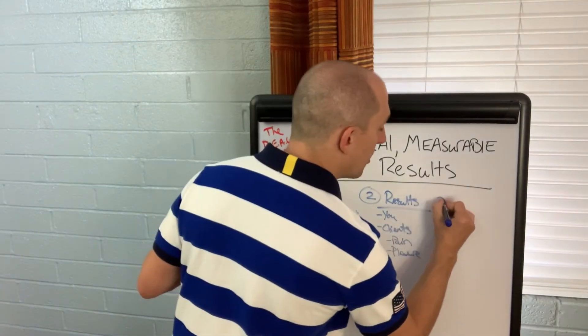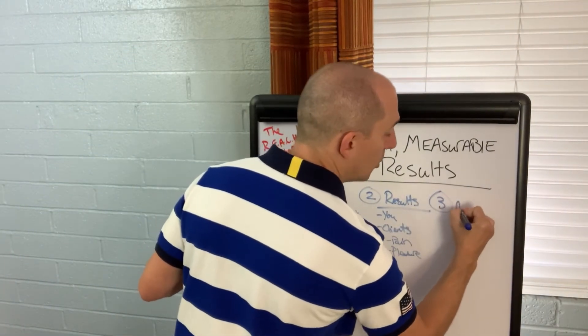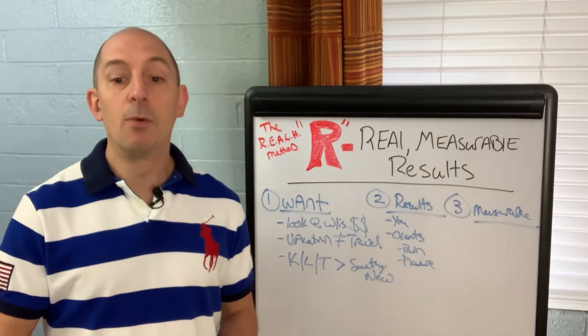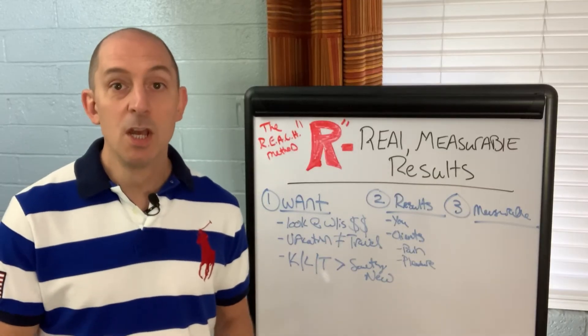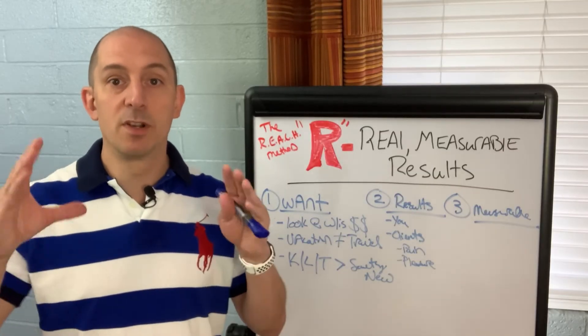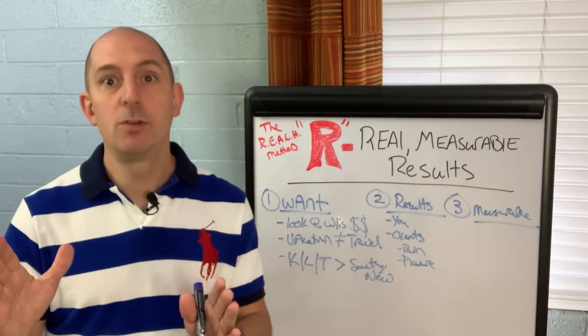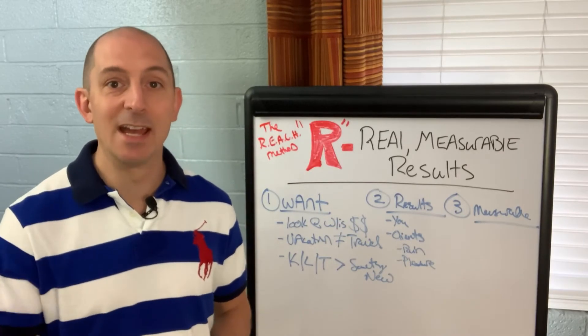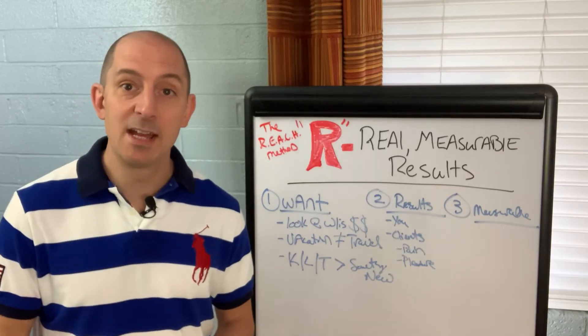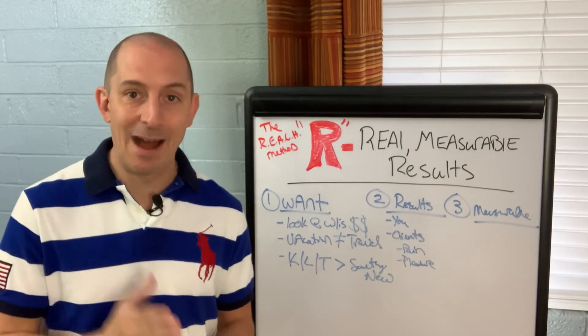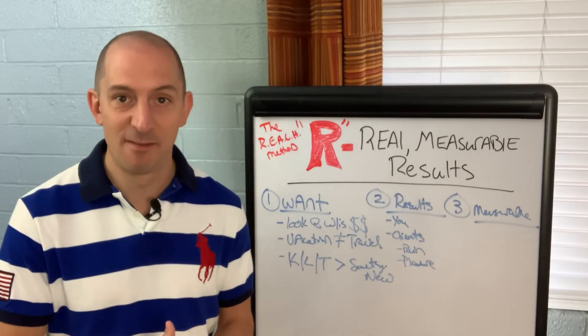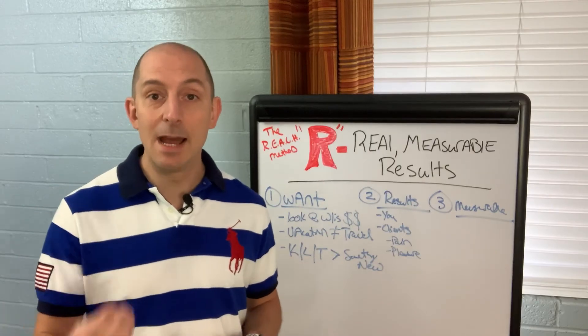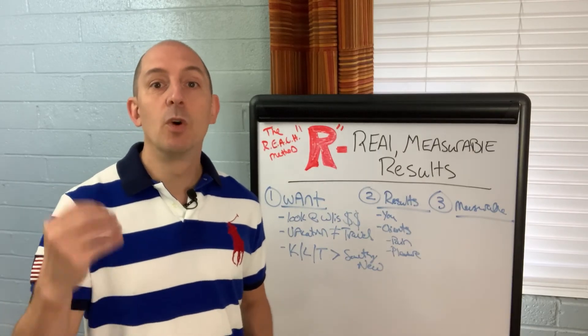Number three: measurable. So the last piece is that it must be measurable. Now, when you're working on this statement, you want to start with it and you want to say, I help who, what results you get for them. Singular result. You cannot use the word and. Here's the thing. When you use the word and it cuts the power of your statement in half. You do not want to have that. You want to have a singular result. Then you want to have a timeframe and then you want to have a so you can statement.